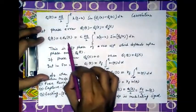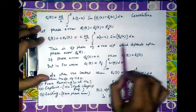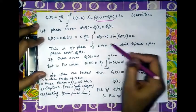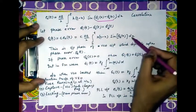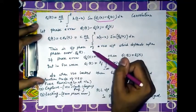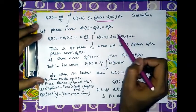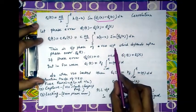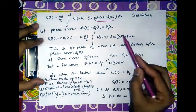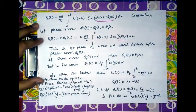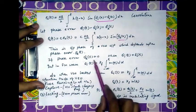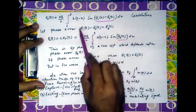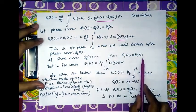Substituting e_0(t) into θ_0(t) = c·e_0(t) and expressing in terms of θ_e(t), we obtain an expression for θ_0(t) — the output phase of the VCO — which depends upon the phase error θ_e(t). If the phase error is equal to zero, then θ_i(t) = θ_0(t).